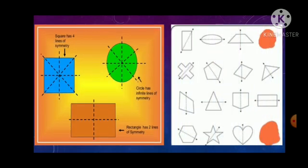Now here you all can see square has four lines of symmetry, circle has infinite lines of symmetry and a rectangle has two lines of symmetry.